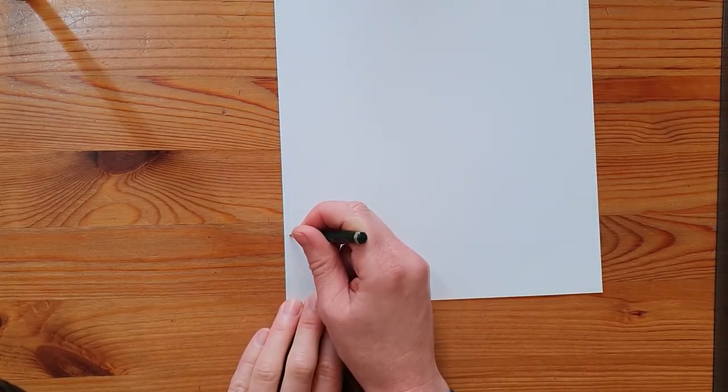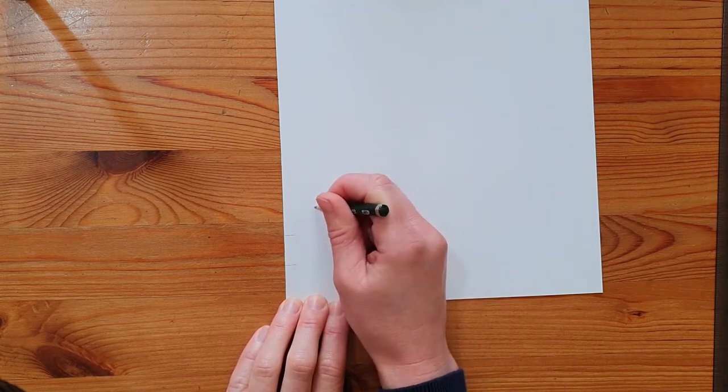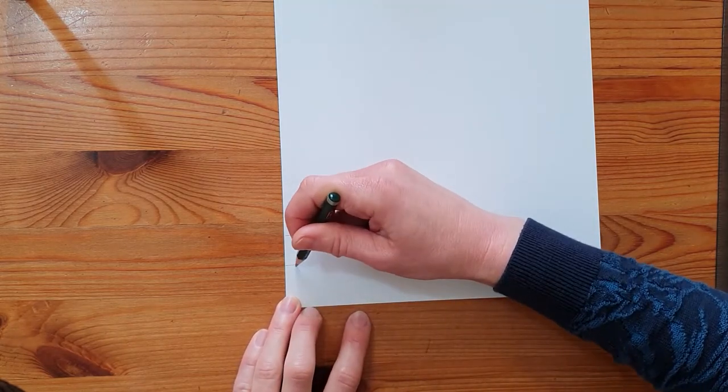To draw the ears, start with two small lines for the glue flap. Then draw a large ear in your own style and cut it out. Make sure you ask for help if you need it.